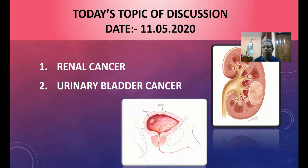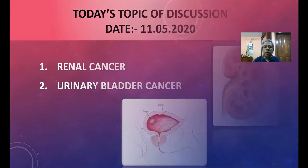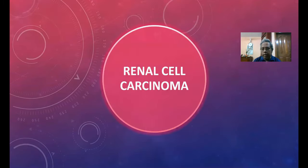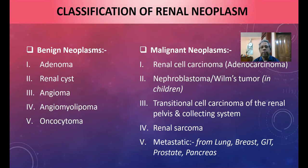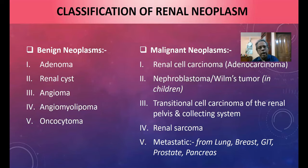First, a guide about the classification of renal neoplasms. Neoplasms can be either benign or malignant. Benign neoplasms include adenoma, renal cyst, angioma, angiomyolipoma, and oncocytoma. These are the benign neoplastic lesions.